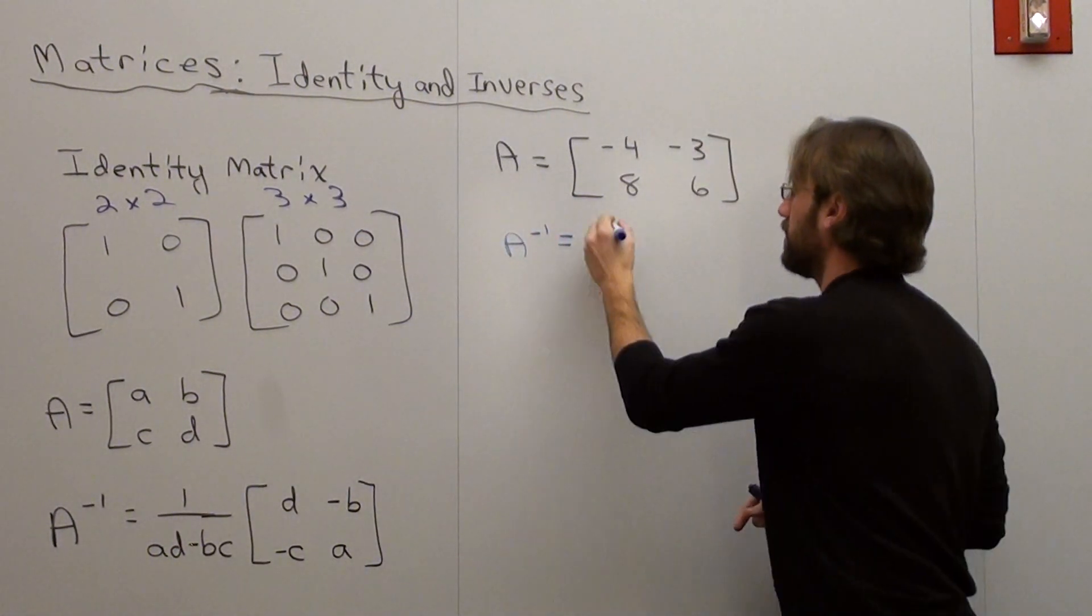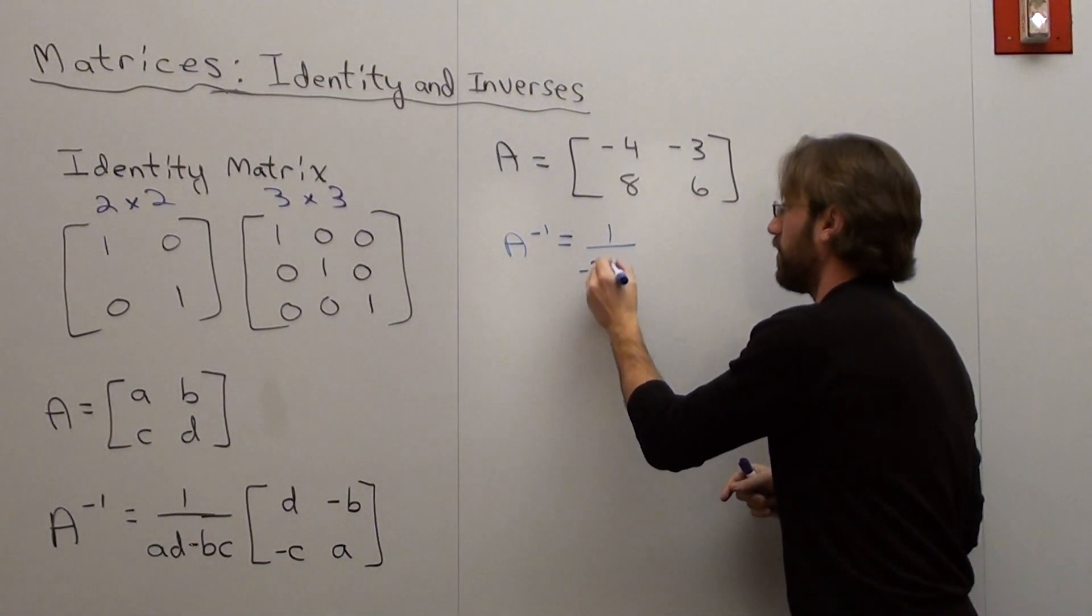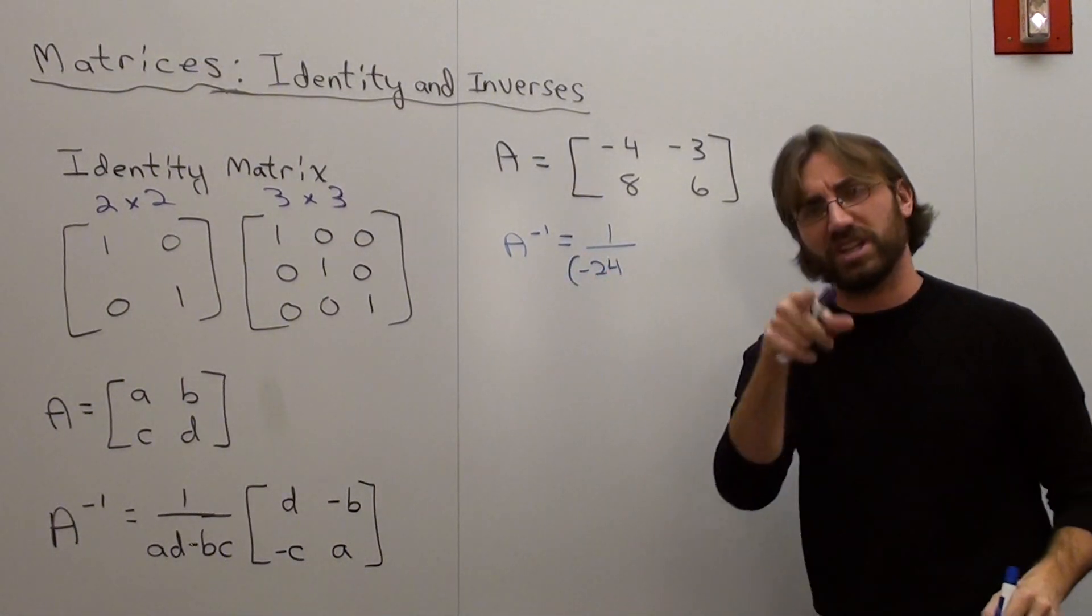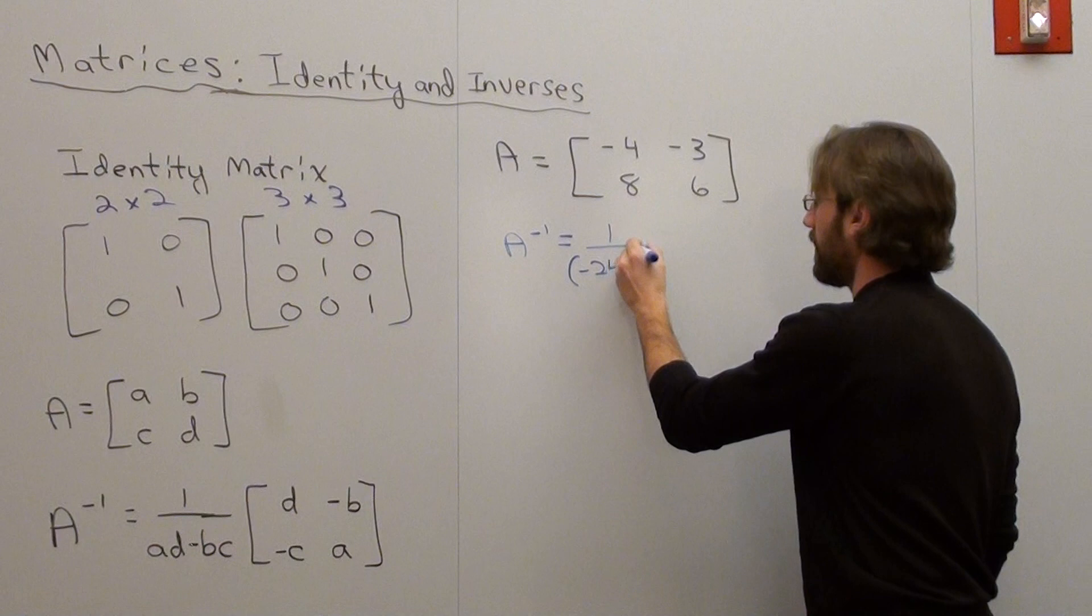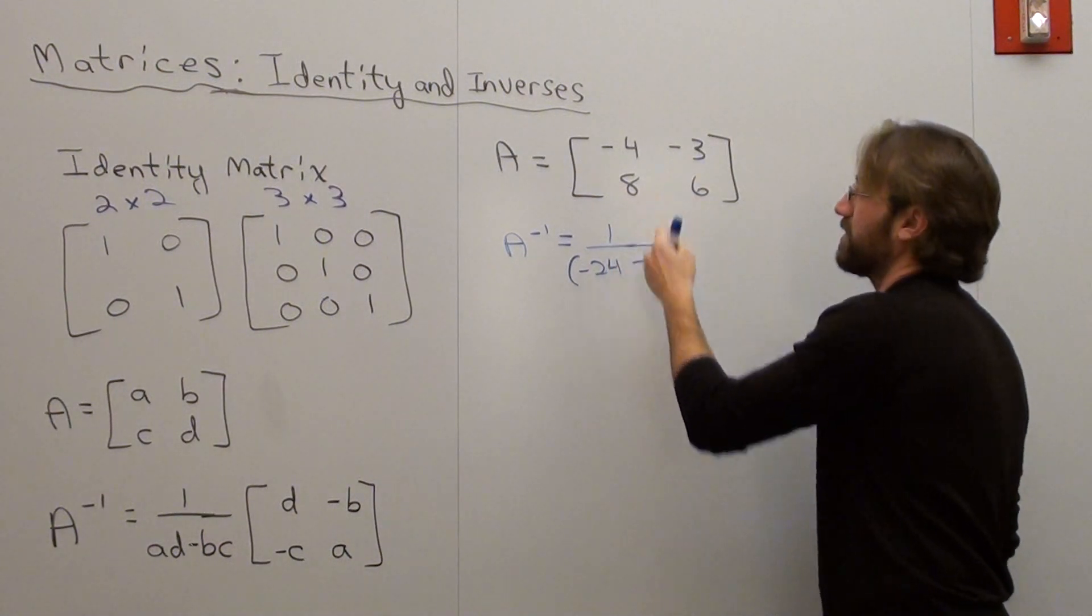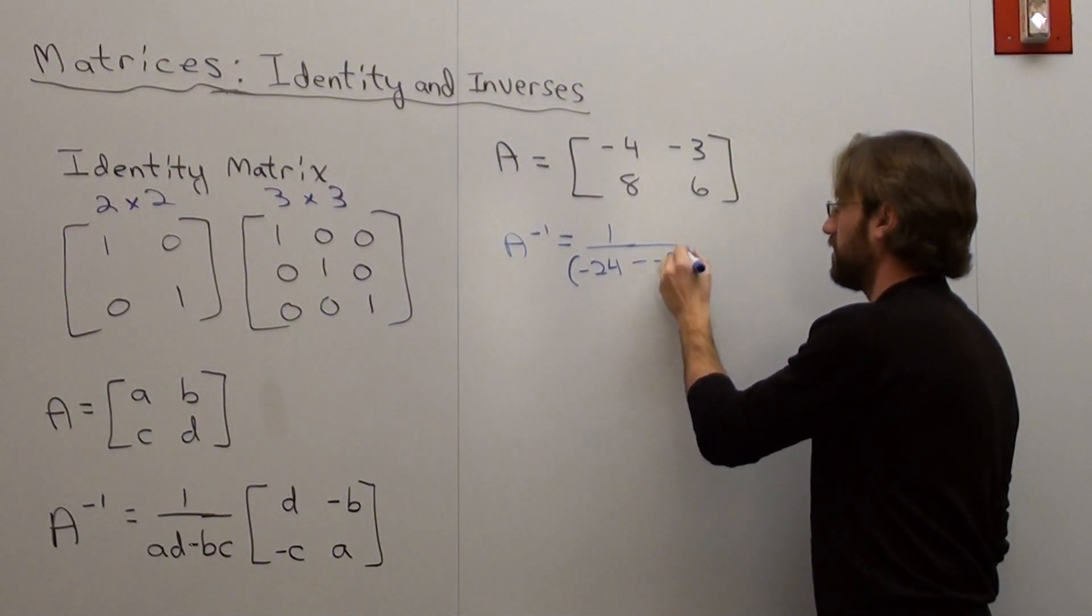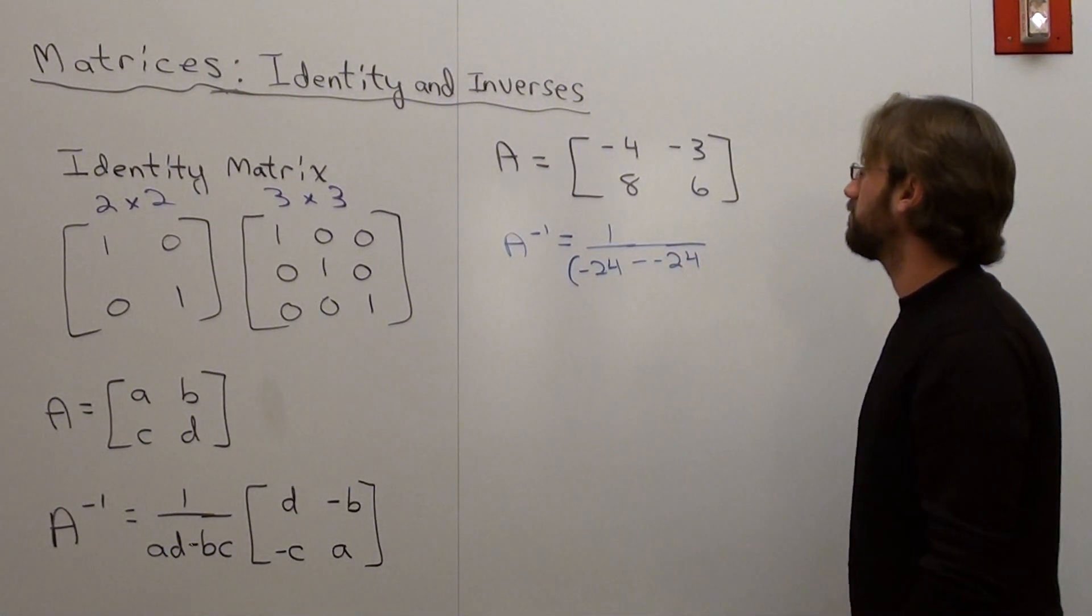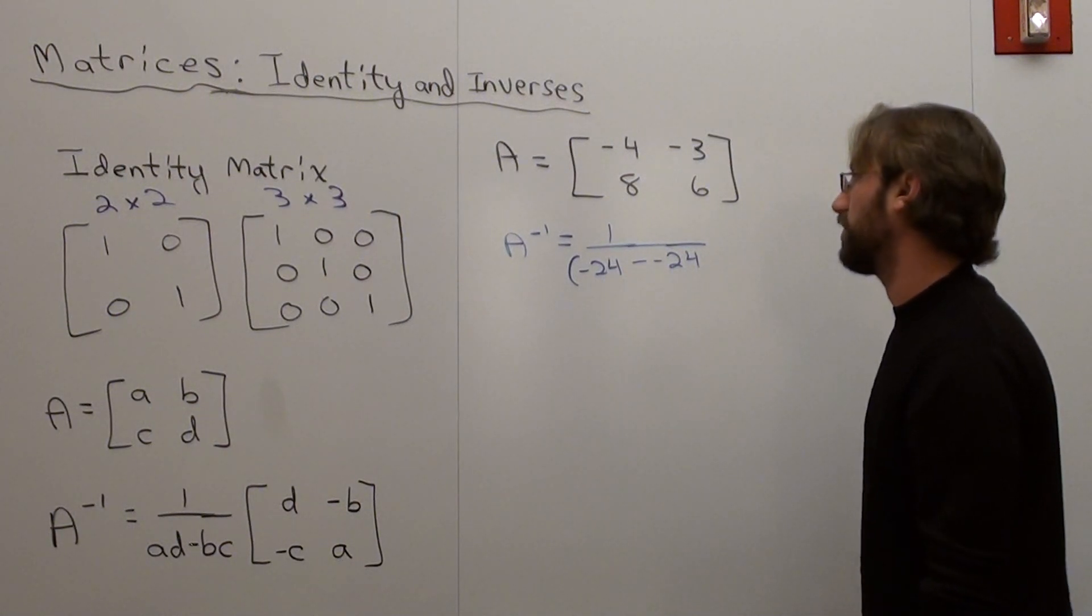That's going to be 1 over AD, which is negative 4 times 6, which is negative 24. I should put parentheses around there just in case you don't do that multiplication right. And then it's subtracted by 8 times negative 3, which is negative 24. So it's negative 24. Uh-oh.